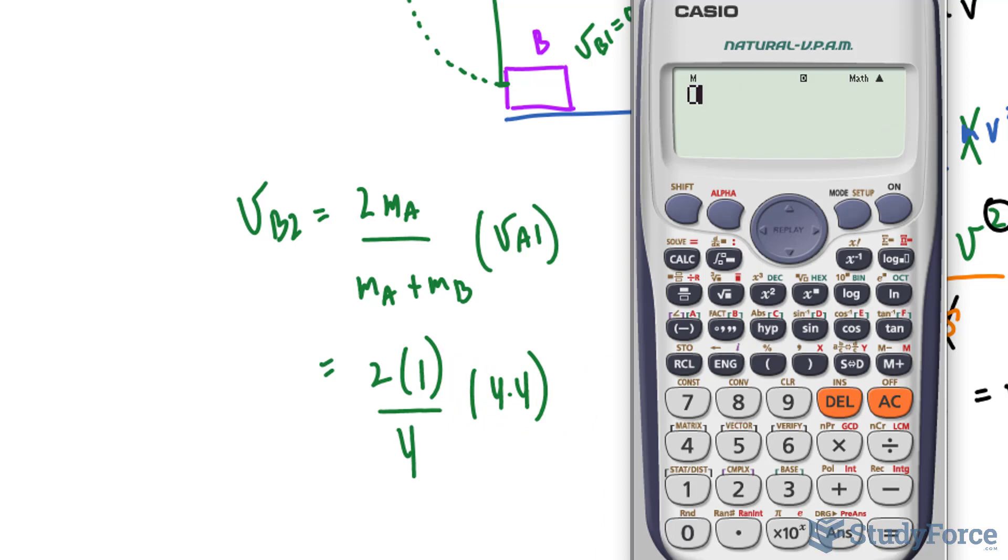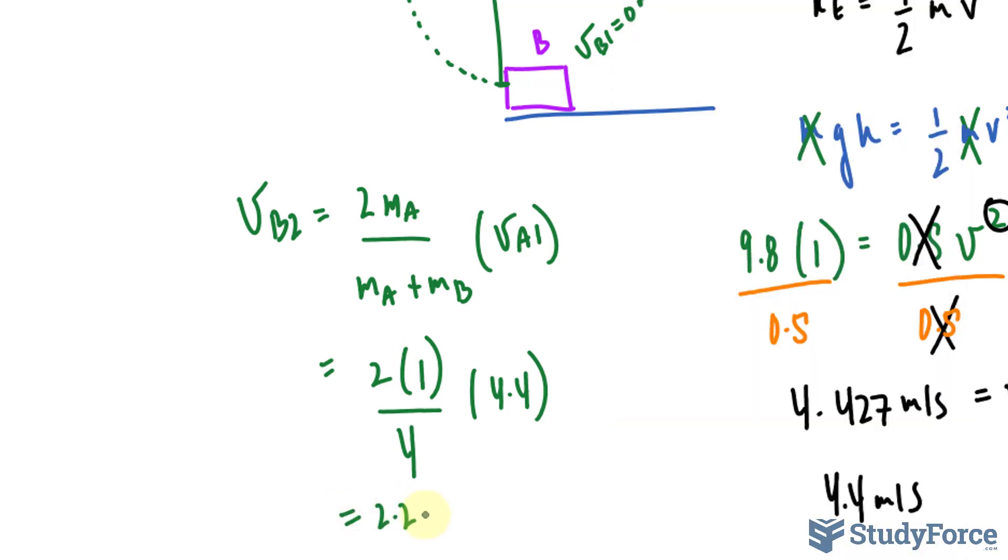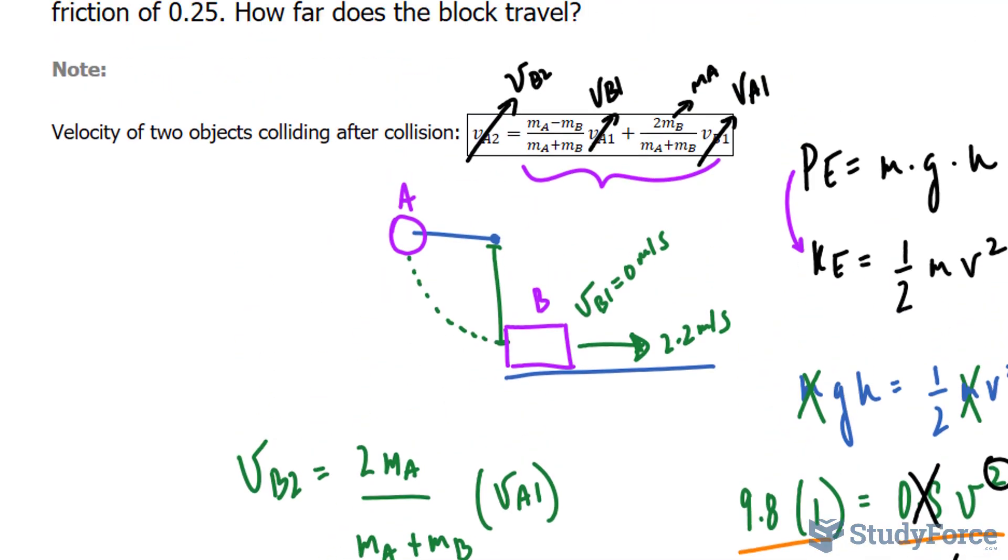And the velocity we found to be 4.4. Using our calculator, we'll take 0.5 times 4.4, and that makes 2.2. So the velocity of this block moving in this direction will be 2.2 meters per second.